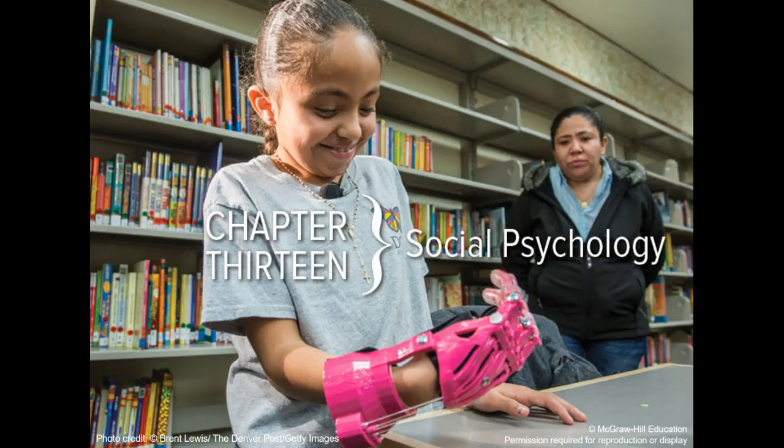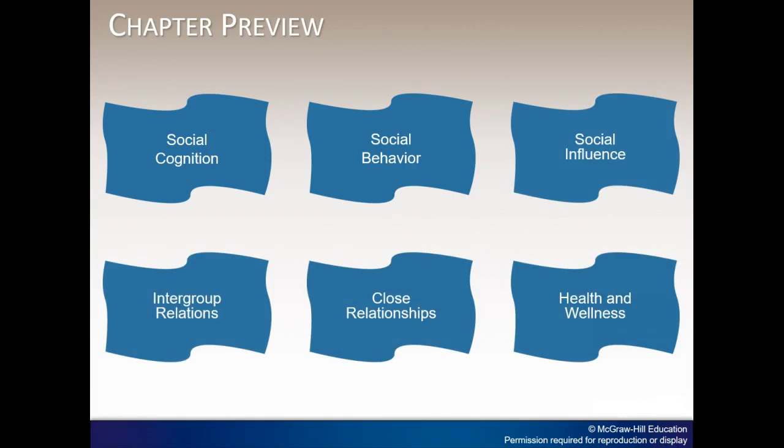Welcome to chapter 13 on social psychology. In this chapter, we will review social cognition, behavior and influence, as well as intergroup relations, close relationships, and the role social psychology plays in health and wellness.